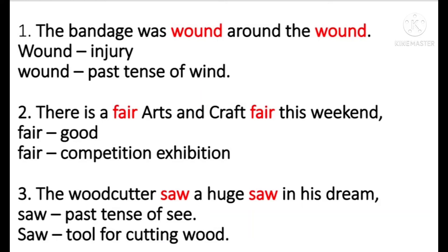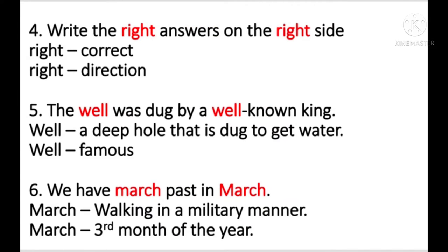The woodcutter saw a huge saw in his dream. So here the first saw refers to the past tense of seeing, and the second one is a tool for cutting wood. Write the right answers on the right side. So right refers to the correct one, and the second right is a direction — that is the right side. The well was dug by a well-known man. So the first well refers to a deep hole dug to get water, and the second one means famous.